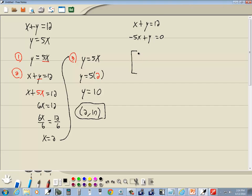The matrix for this is [1, 1, 12; -5, 1, 0]. We drop the x's, y's, and equals signs, keeping just the numbers and signs. This is 2 rows by 3 columns. Now we'll input this.